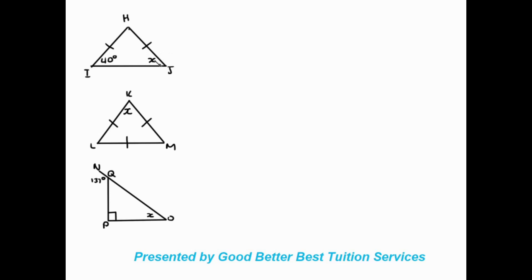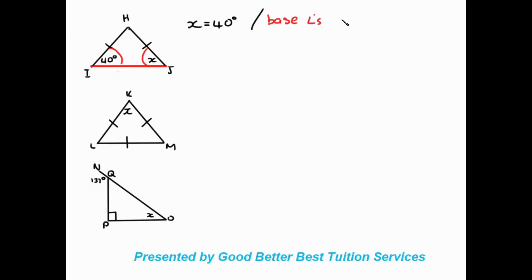Next, we have triangle HIGA with two equal sides — an isosceles triangle — with base angles of 40 degrees and x. We know base angles of an isosceles triangle are equal, so x = 40 degrees. Our reason: base angles of an isosceles triangle are equal.